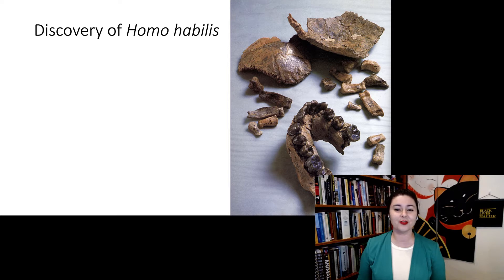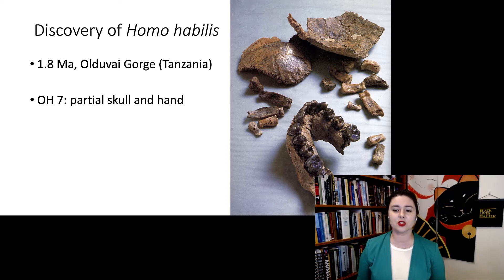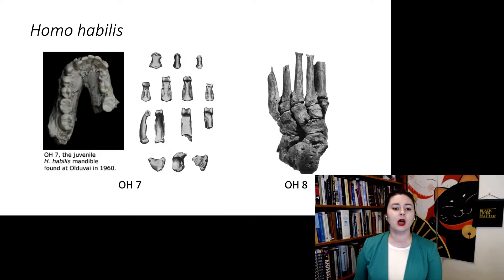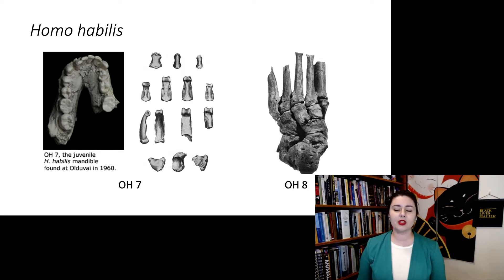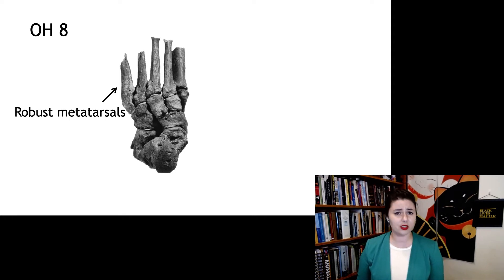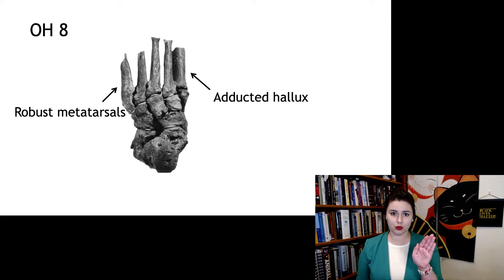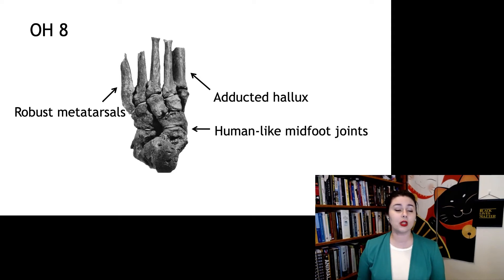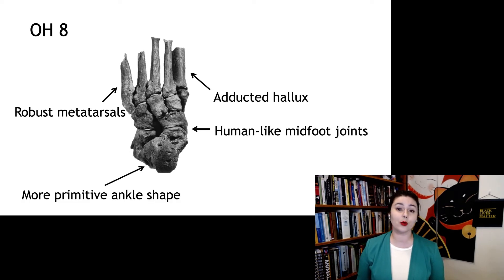Homo habilis is one of the most famous specimens. It was first discovered in Olduvai Gorge in Tanzania. We have OH7, a partial skull and hand, and OH8, which is a foot. OH7 includes a mandible — probably a juvenile mandible. OH8 is partial, but look at those metatarsals: very robust, very similar to ours. Also, look at that big toe — it is super in line, adducted, very similar to our foot. We also see very human-like midfoot joints. The ankle is a little bit more primitive, but everything else is more derived than what we've been seeing before it.